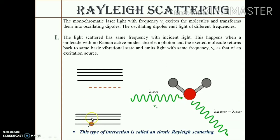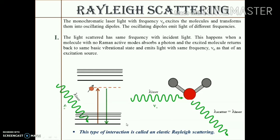This happens when a molecule possessing an electron in a particular energy level with no Raman active modes absorbs an incident photon and is excited to a higher energy level. Since this higher energy level is a temporary phase, the electron comes back to its initial energy level and emits light with the same frequency ν₀, the same as that of the excitation source.